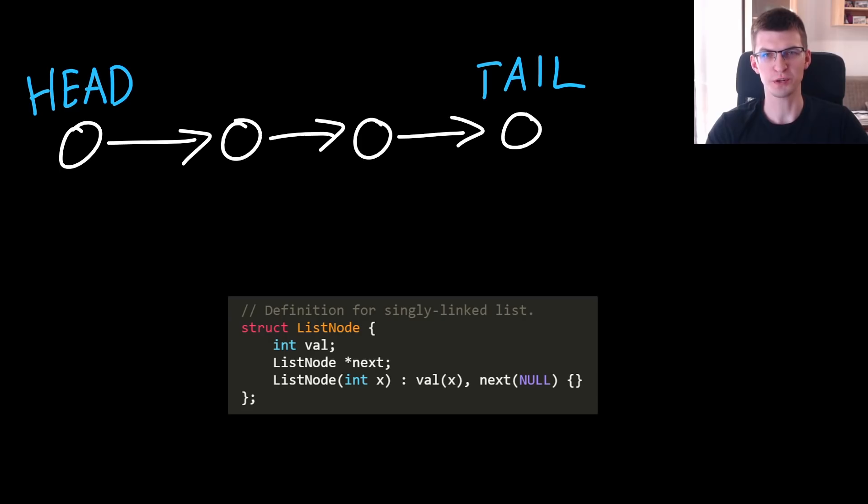Before solving this problem, let's first talk about terms and words used for linked lists. The beginning of a list is called head, the end is tail.